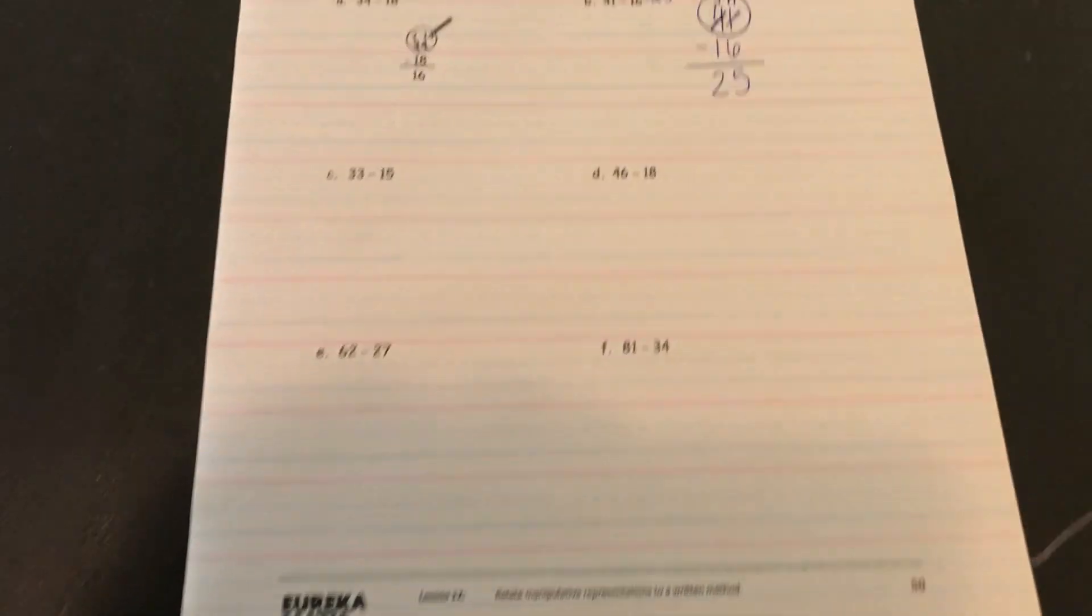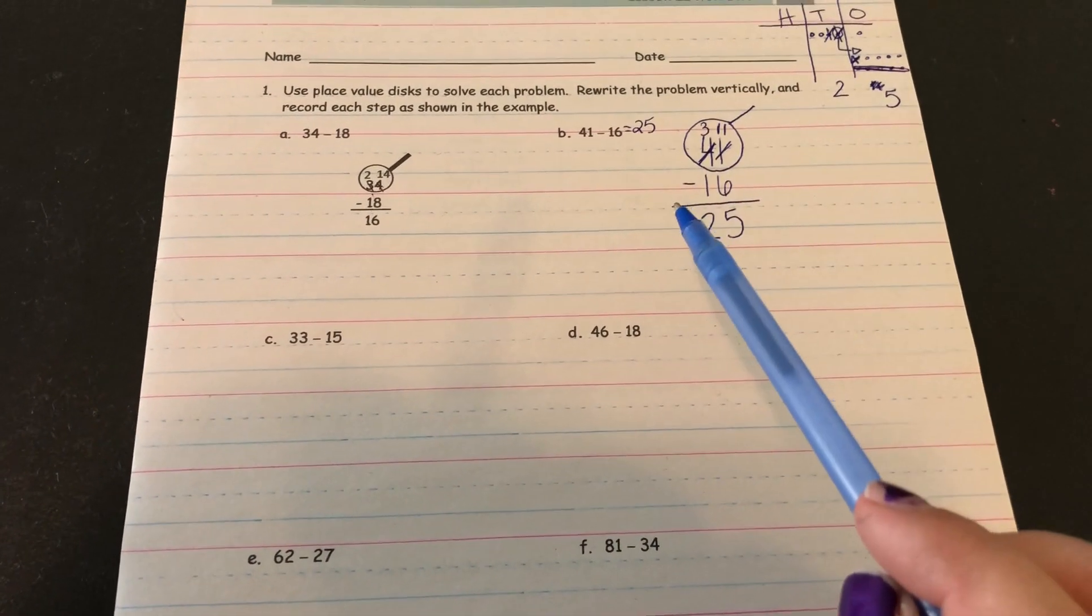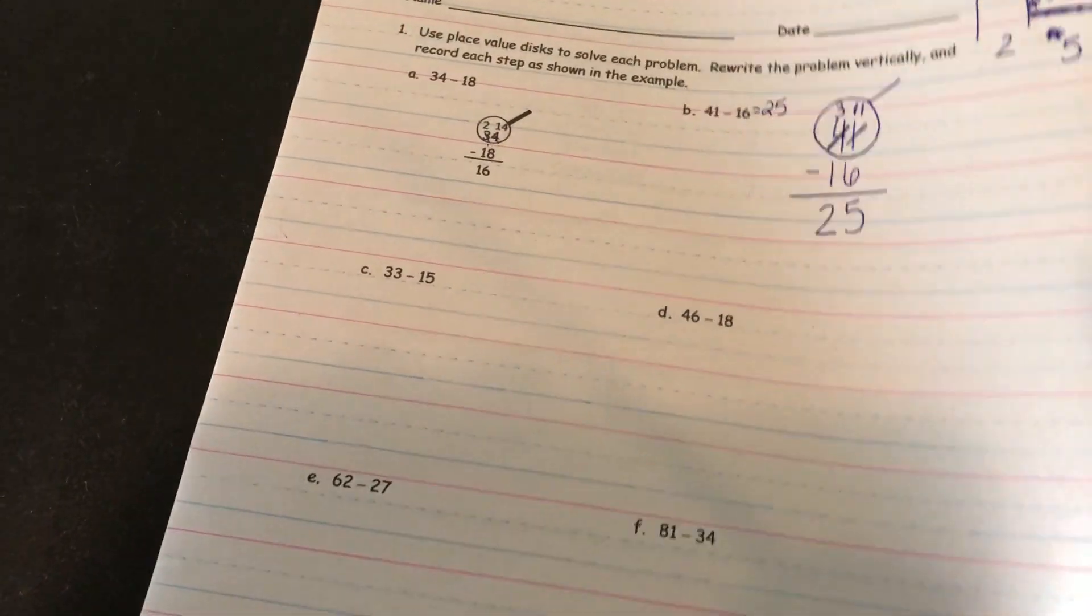So that's what they want you to do for these problems. Solve it in your vertical form, and then solve it with place value disks or writing a place value chart.